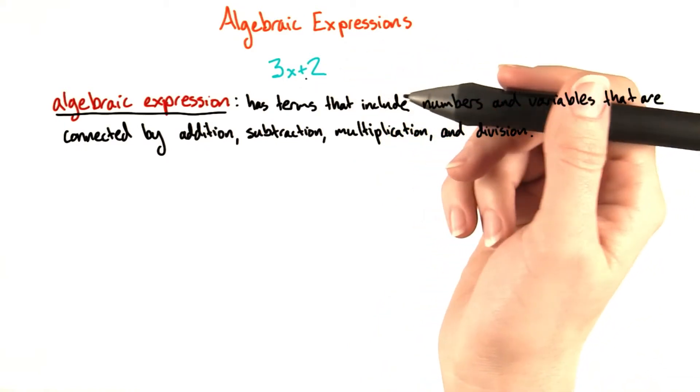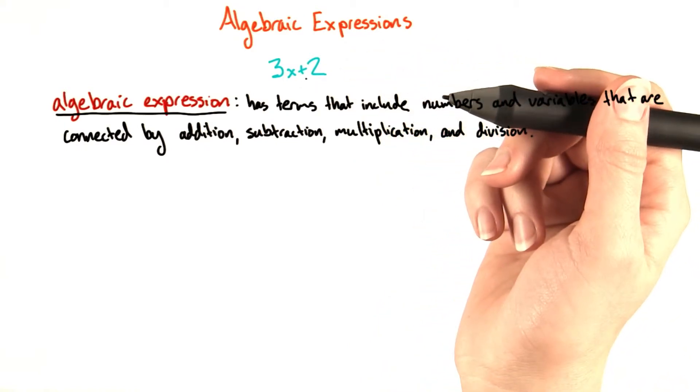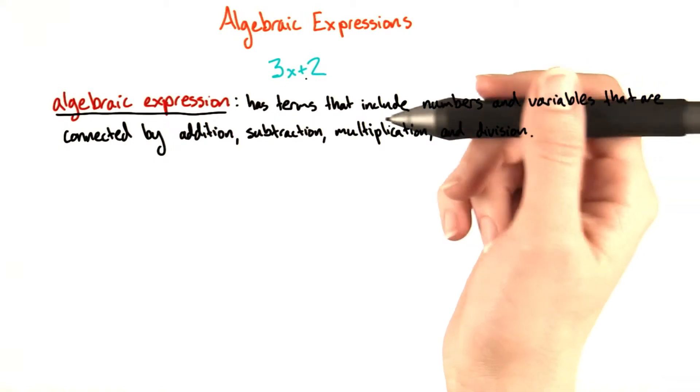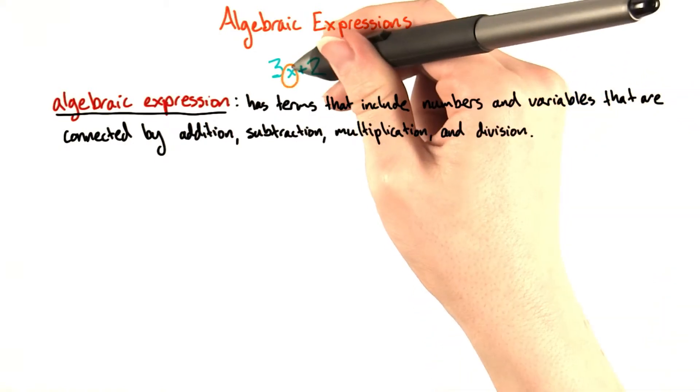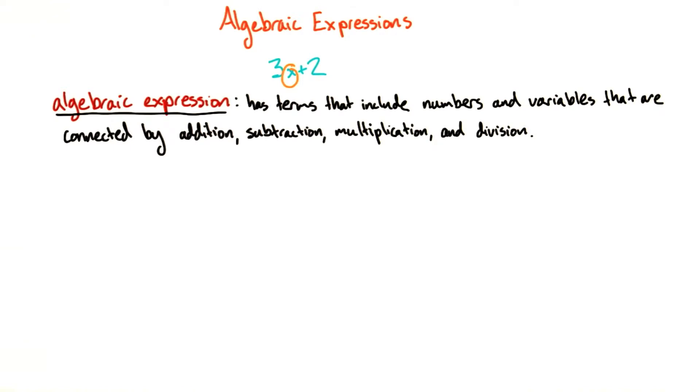Remember that a variable is a letter or symbol that we use in an equation or expression to represent an unknown value. X is a very common letter to use for a variable, but you could use any letter in the alphabet.